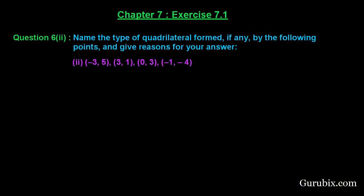Welcome friends. Let us solve the second part of question number 6 of exercise 7.1 of chapter 7. The question says: name the type of quadrilateral formed, if any, by the following points, and give reason for your answer. We are given four points, so let us see how to solve this question.